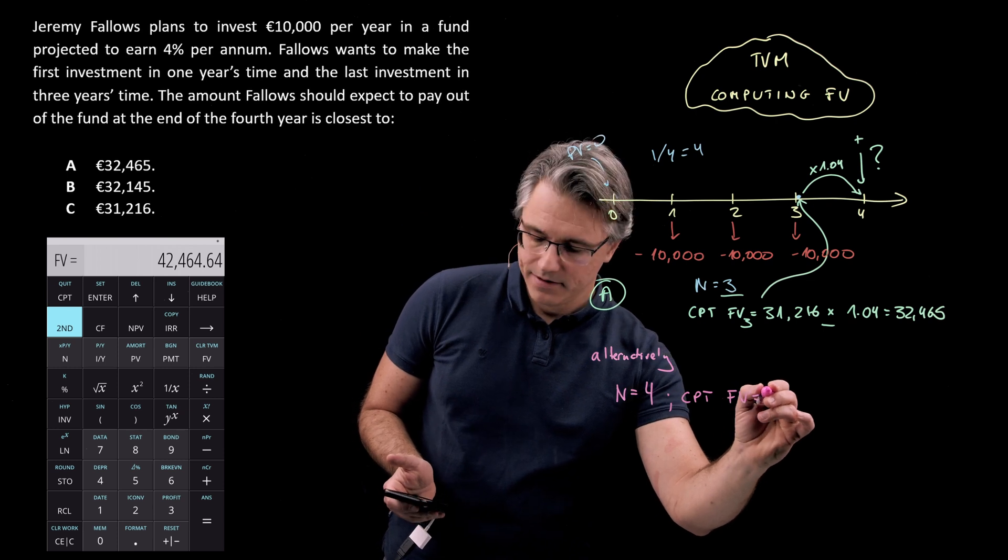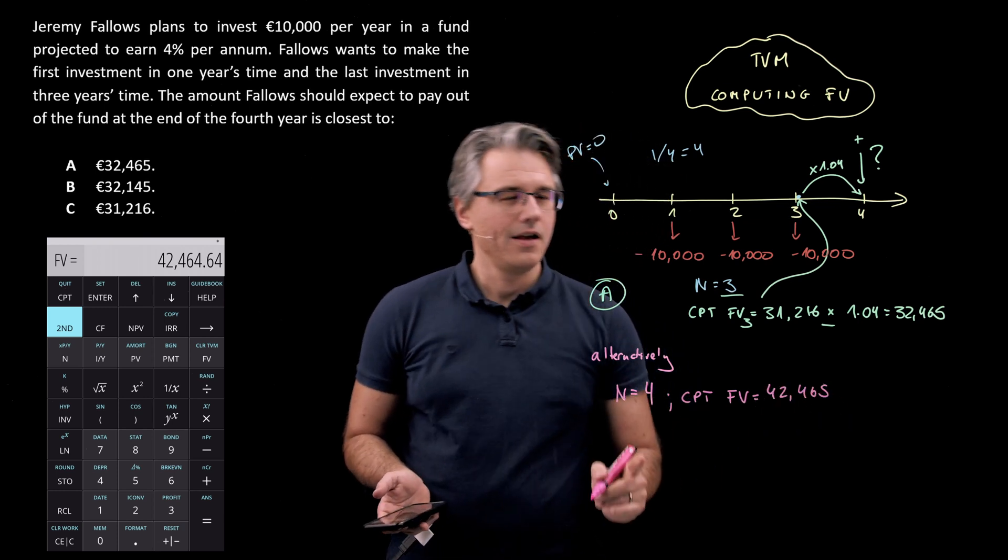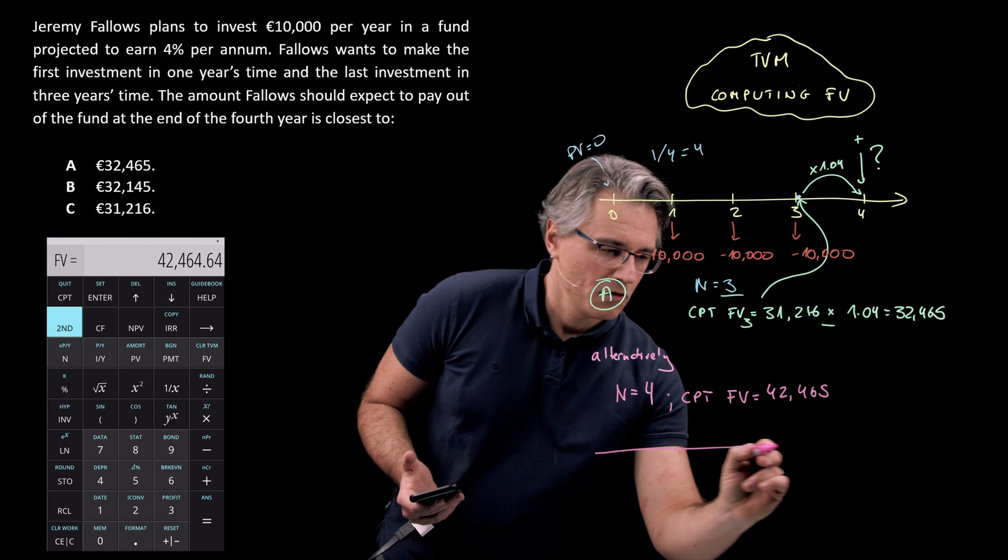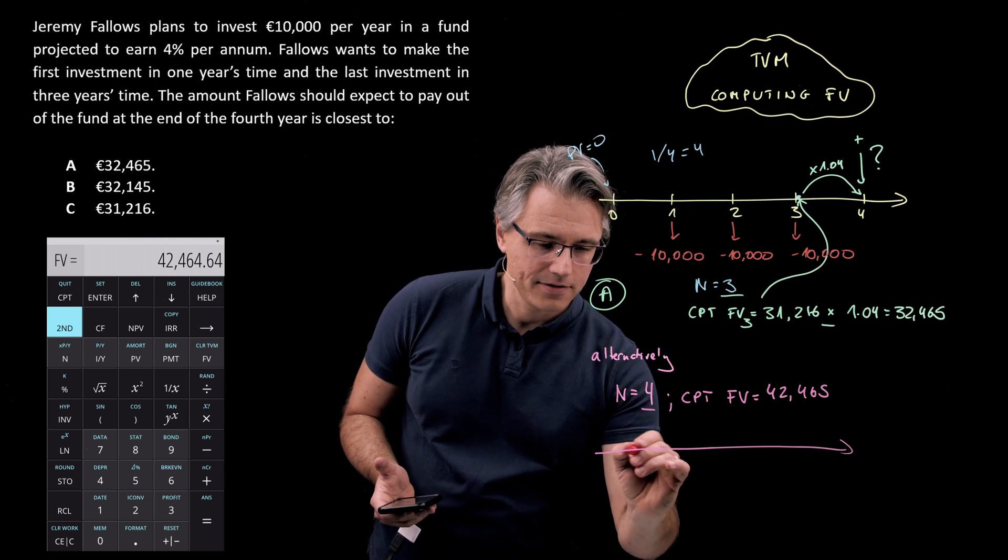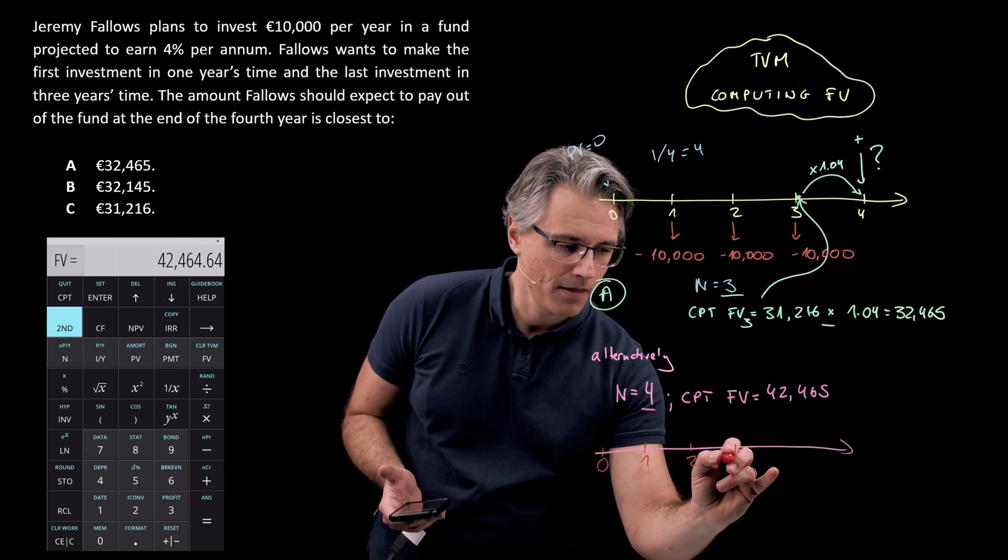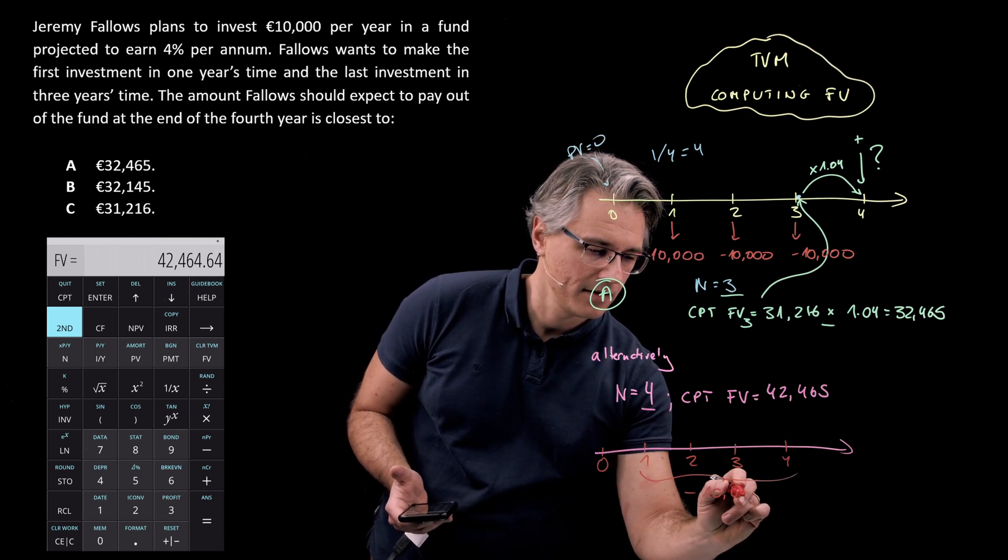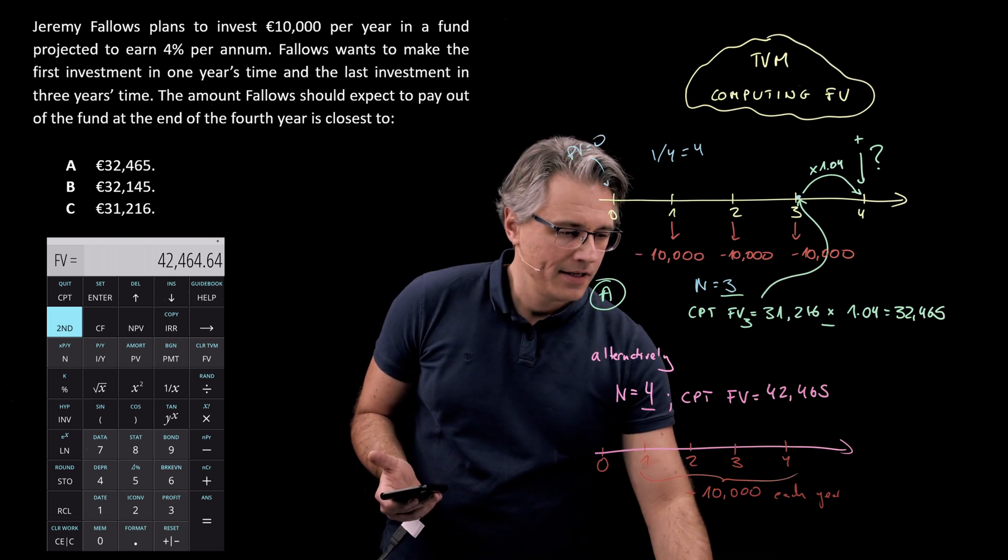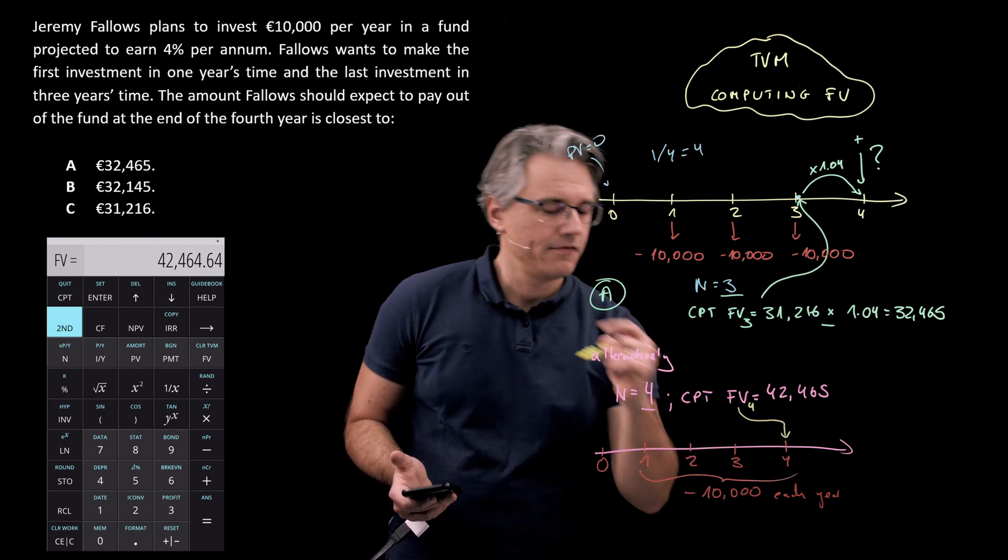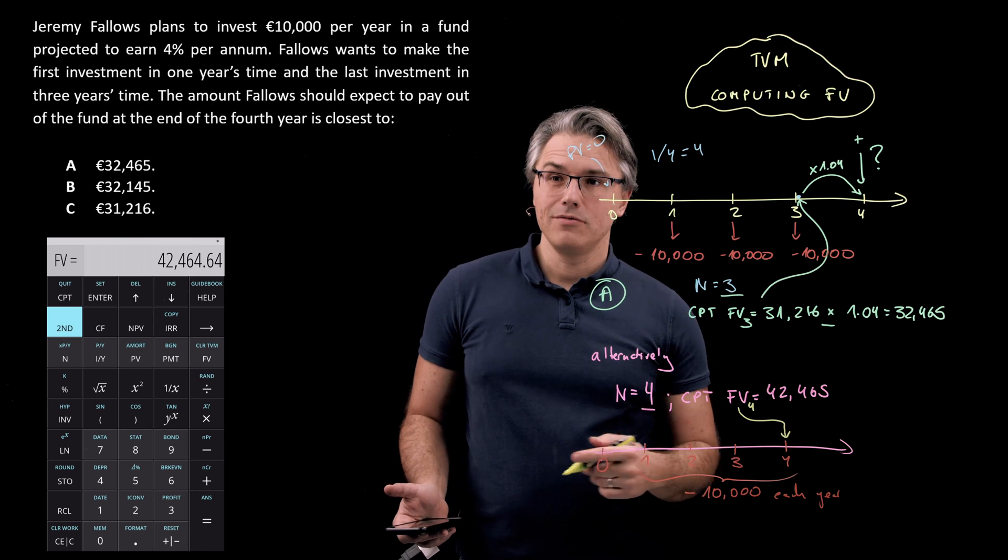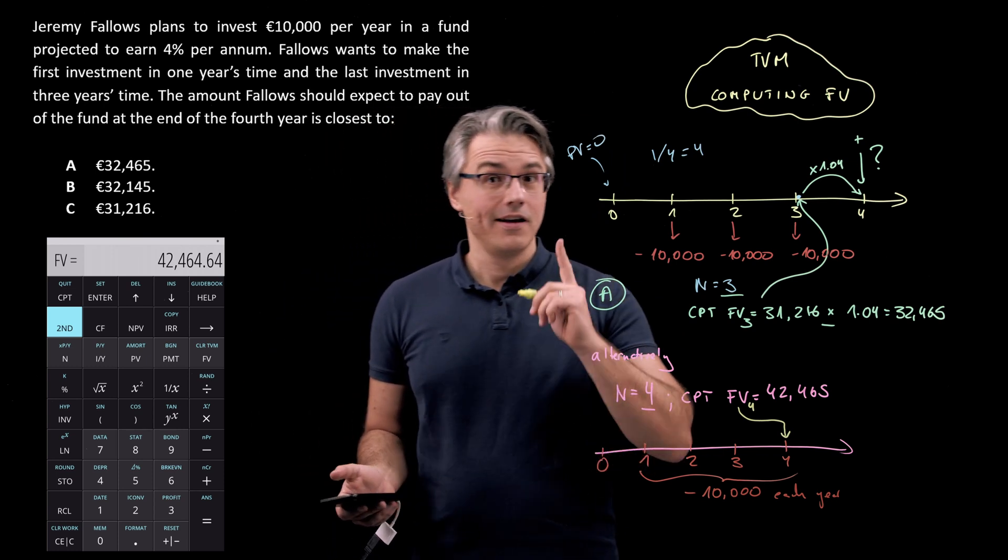And now it displays 42,465. But what your calculator assumes when you tell it n equals to four is that there is a series of not just three but four payments of 10,000 each year and it spits out an FV whose location on the timeline is correct because this is an FV at the end of time four, but assuming there is an additional fourth payment of 10,000 which naturally is not the case in this question.